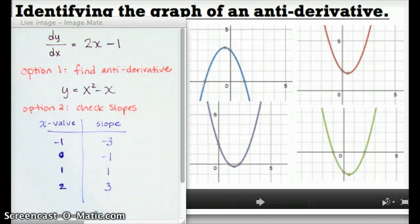Awesome. And now, the last step would be to check these slopes. In other words, look at each of these graphs. Look at the point where they have an x value of zero. And check whether at that x value of zero, the slope is negative one.